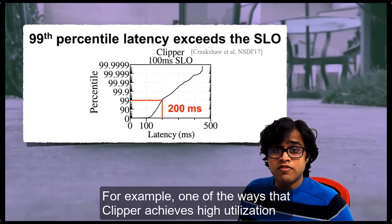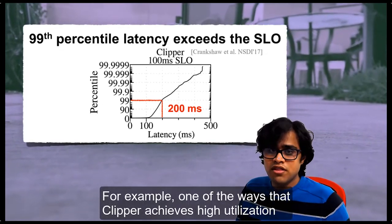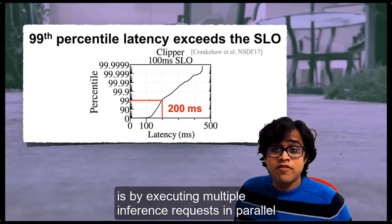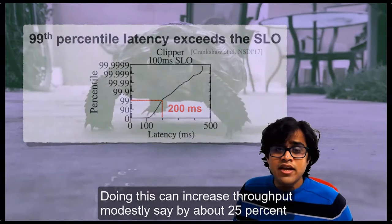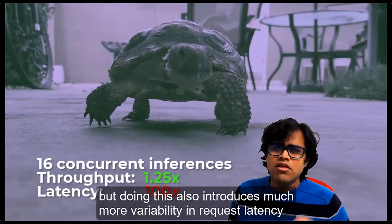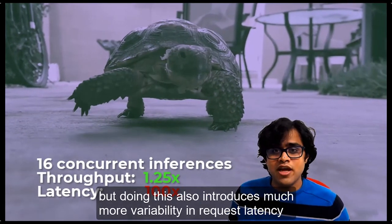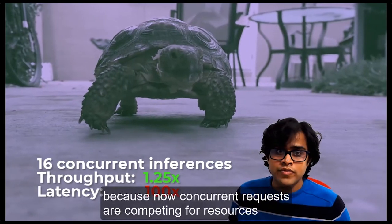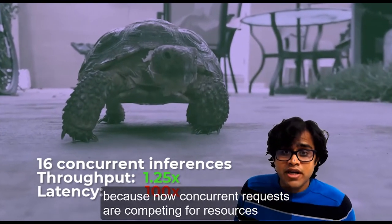For example, one of the ways that Clipper achieves high utilization is by executing multiple inference requests in parallel. Doing this can increase throughput modestly, say by about 25%. But it also introduces much more variability in request latency because concurrent requests are competing for resources.